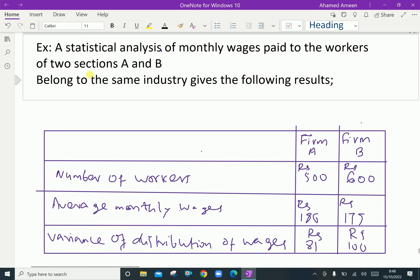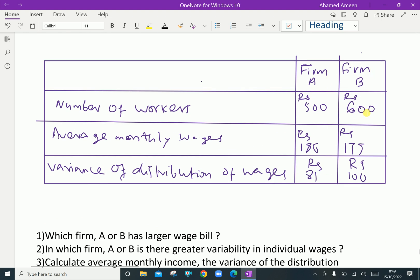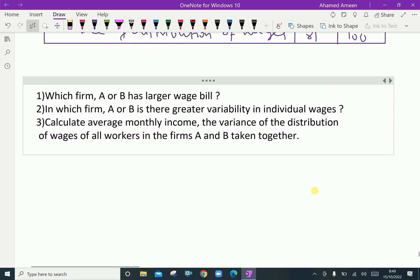For example, a statistical analysis of monthly wages paid to workers in two firms A and B in the same industry gives the following results: Firm A has 500 workers and Firm B has 600 workers. Average monthly wages are Rs. 186 and Rs. 175 respectively. Variance of the distribution of wages is Rs. 81 and Rs. 100. Now let us answer these questions.